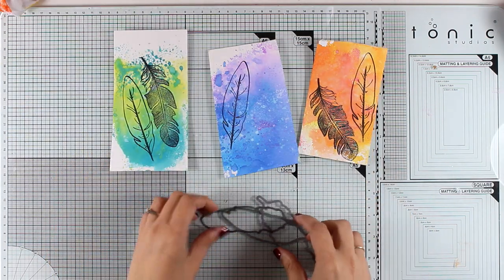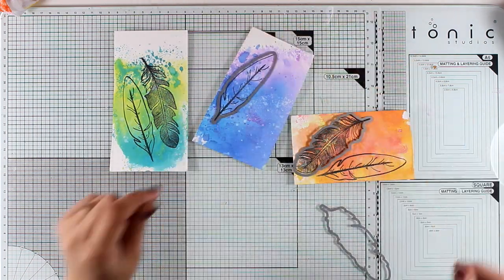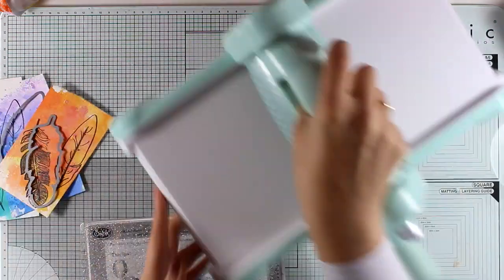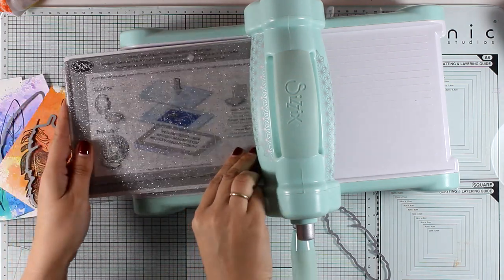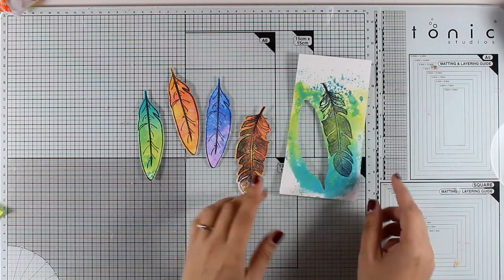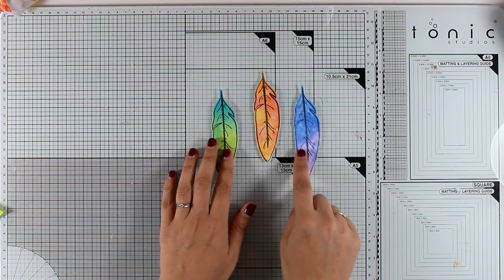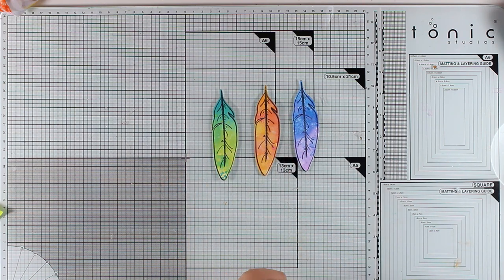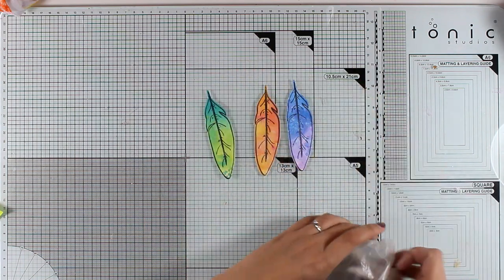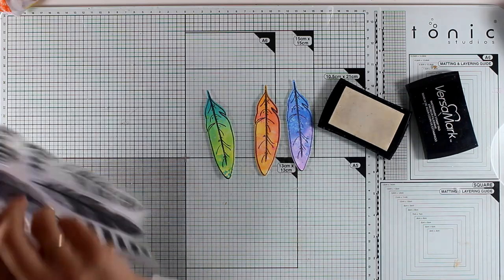You could easily turn this idea into a card. You see all three of them look beautiful. All you have to do is just stick them on top of a standard card and add a sentiment. But since I am going for an art journal today I'm going to cut them out. Now look how this feather looks. Just because it has so many black lines it actually covers up that beautiful pattern that I got from the distress oxide inks. That's how I decided to use this design of feathers so that I don't cover up all this beauty.